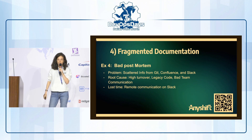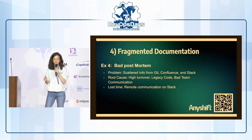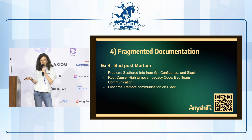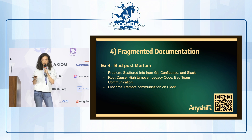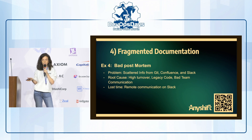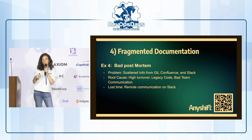The fourth reason why it's hard to understand what has happened is fragmented documentation. Very often, your documentation is scattered among Git, your codebase, Confluence, or Slack, and you can have bad post-mortems or bad documentation about what happened. Especially, your Git codebase with infrastructure as code will not necessarily represent what's happening in your cloud — you have drifts, things done manually on the console, dead code, shadow IT.